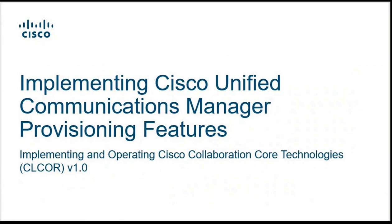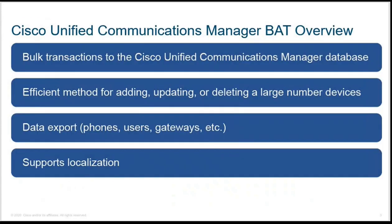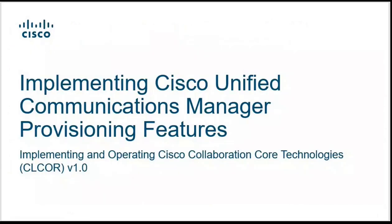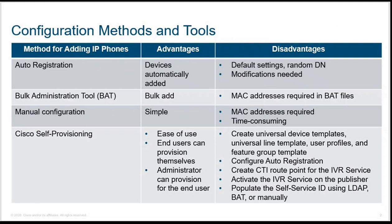We will talk about the provisioning features of CUCM, or different methods of provisioning in more detail. We discussed how the registration process works, how IP phones get registered. Now, what are the different methods of registering these phones? There are different configuration methods and tools: autoregistration, BAT (bulk administration tool), manual configuration, and Cisco self-provisioning. These are the four methods for adding or registering IP phones, and we will discuss their advantages and disadvantages one by one.